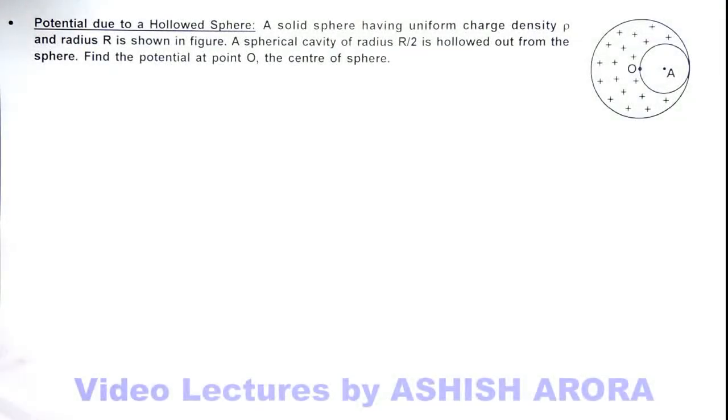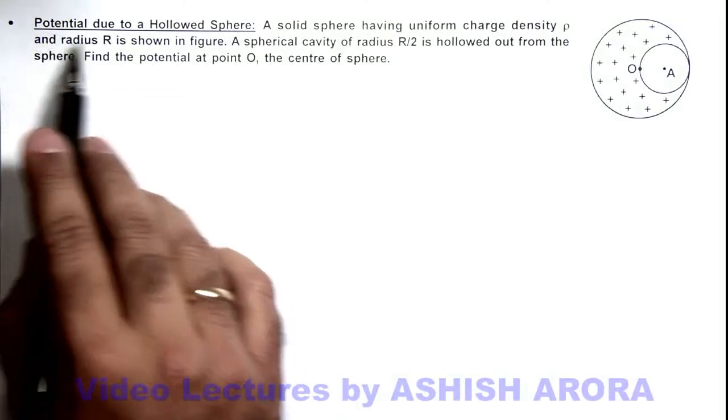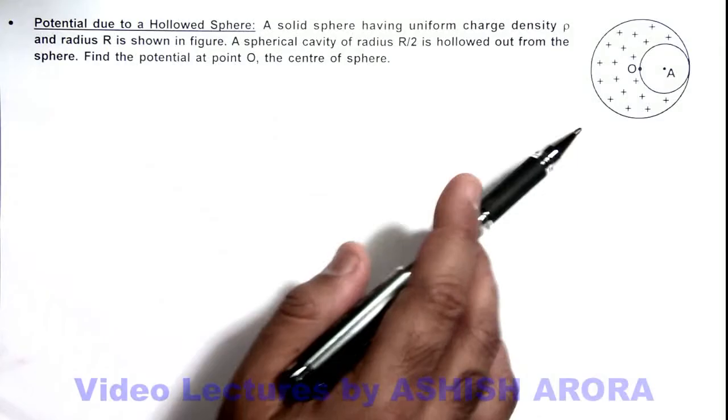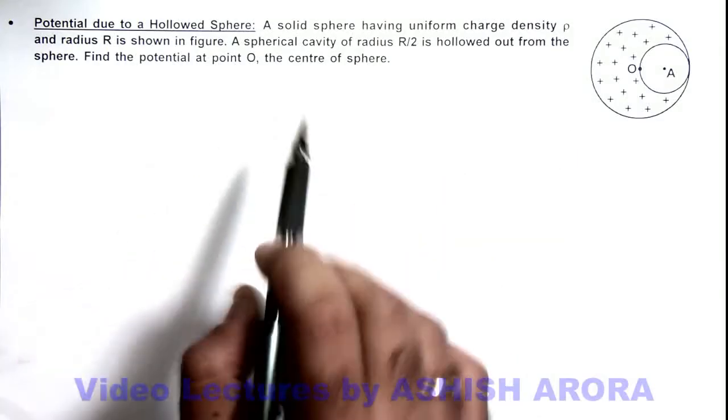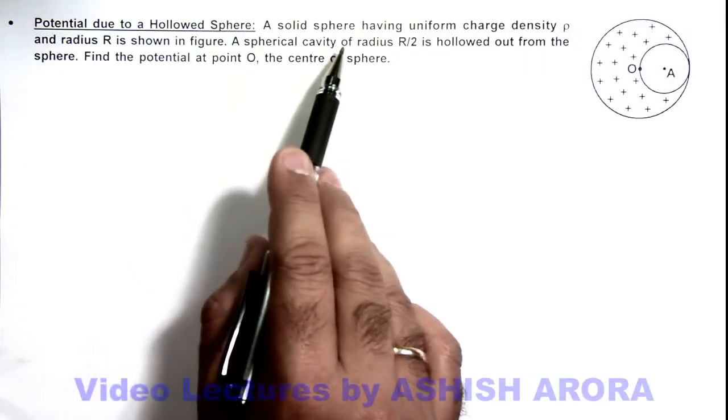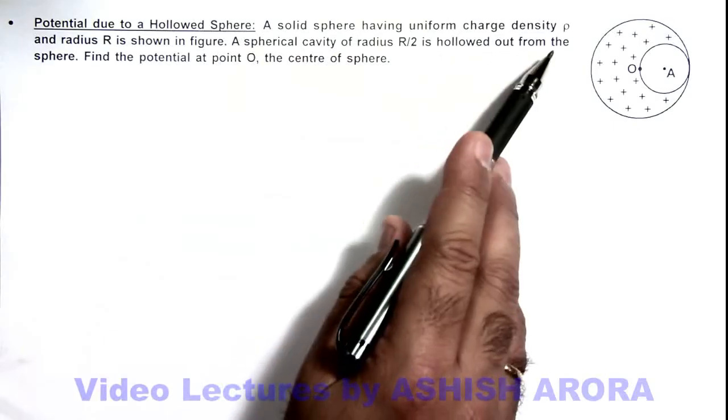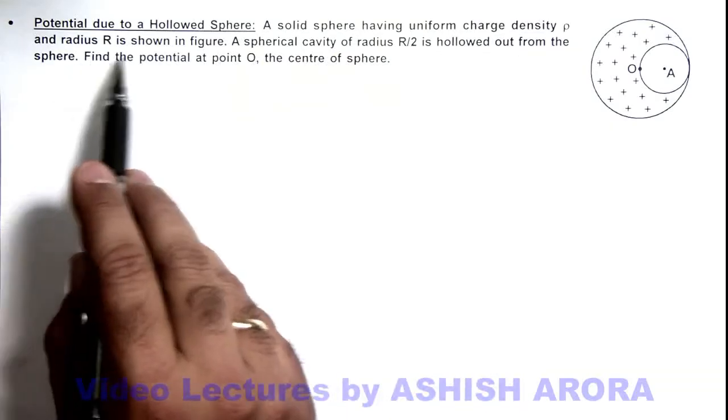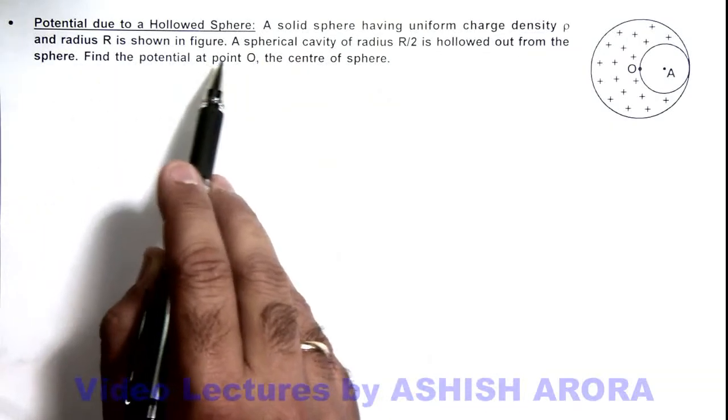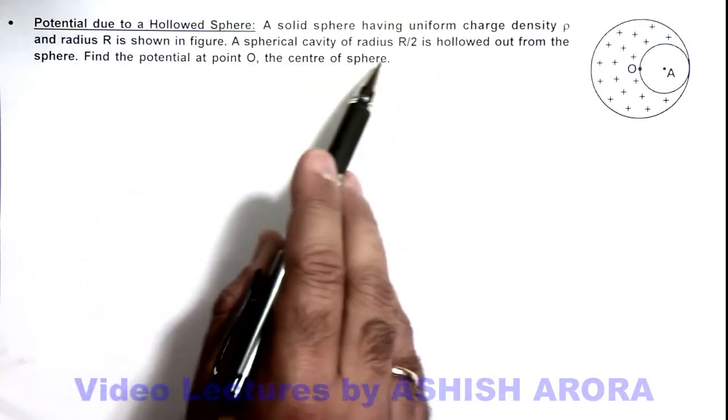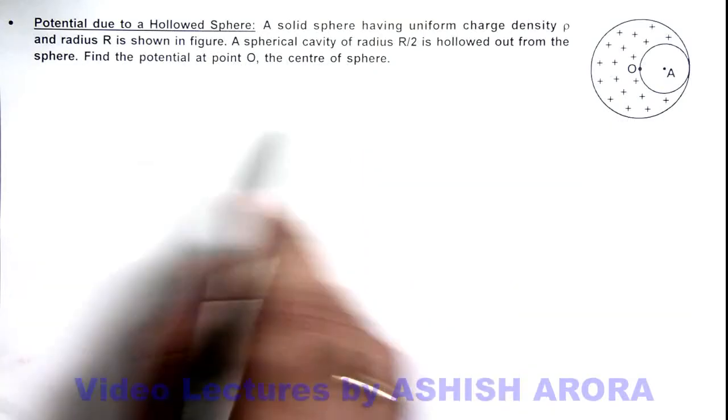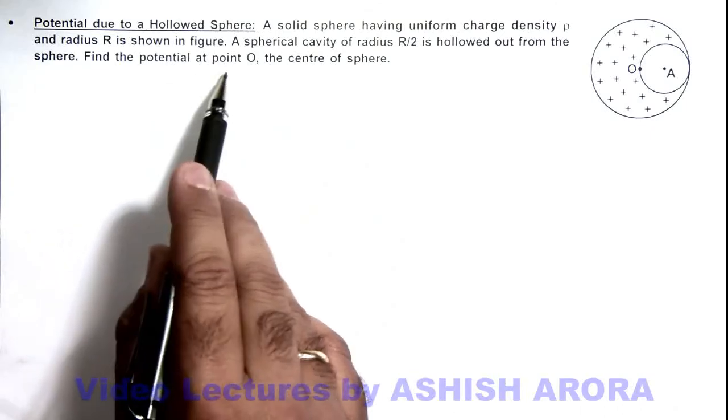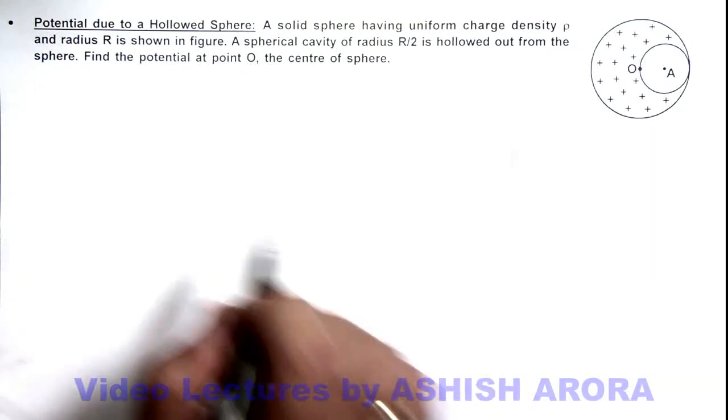Dear students, let's now analyze the illustration for calculation of potential due to a hollowed sphere. Here we can see in the picture a solid sphere having uniform charge density ρ and radius R shown in figure. A spherical cavity of radius R/2 is hollowed out from the sphere, and we are required to find the potential at point O, which is the center of this sphere.